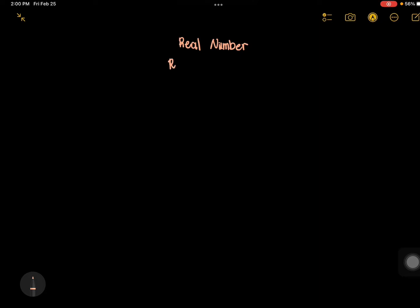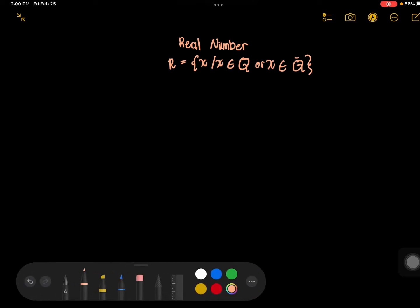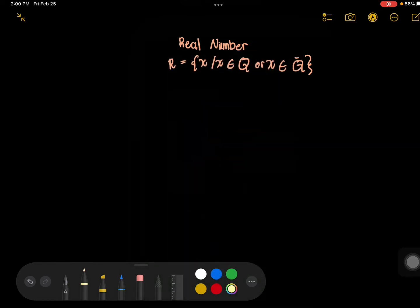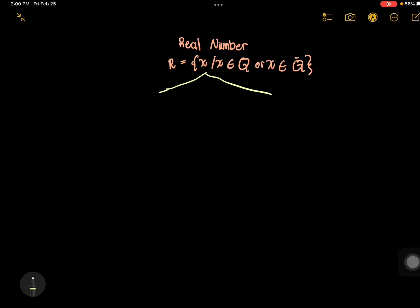Real numbers are defined as: x such that x is an element of Q or the irrational numbers. Basically, it is subdivided into 2: we have the rational numbers and the irrational numbers.